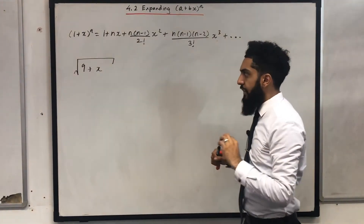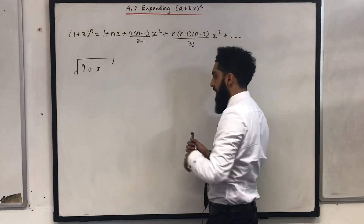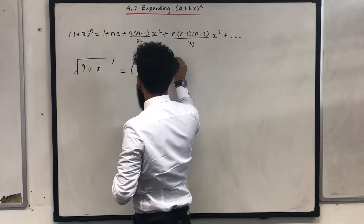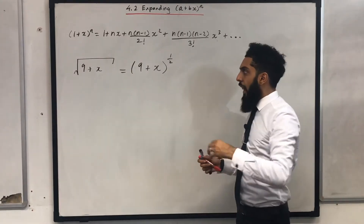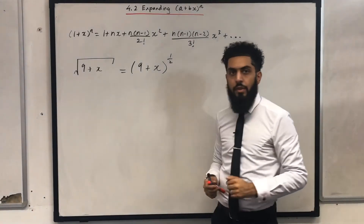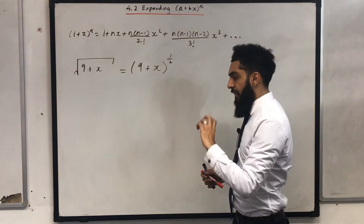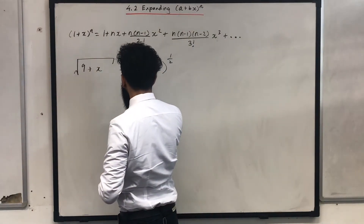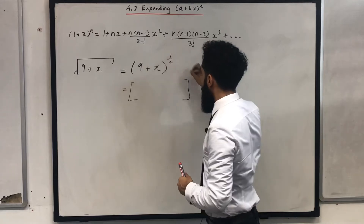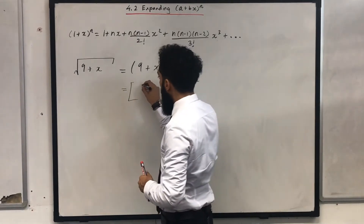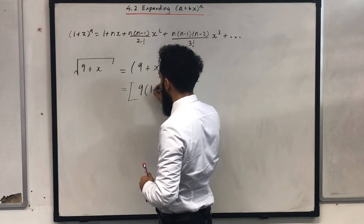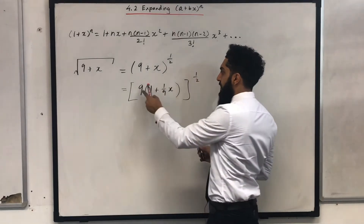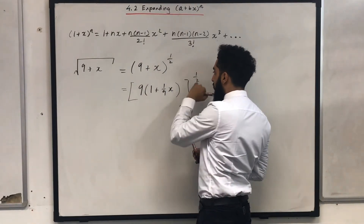What I'm going to do first is rewrite square root of (9 + x) in a different form: bracket (9 + x) to the power 1/2. I need to make that 9 into a 1, and the way I do that is by factoring out a 9. So I can write it as: 9 times bracket (1 + (1/9)x), all to the power 1/2. If I expand this I just get 9 + x, and I've got my power 1/2.